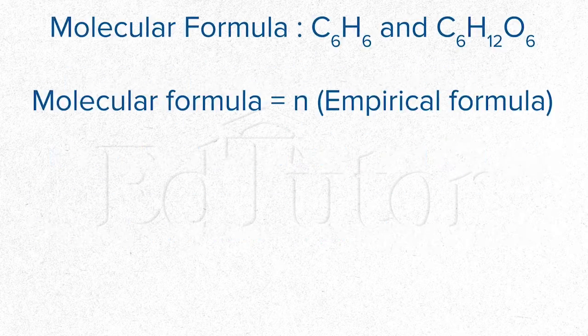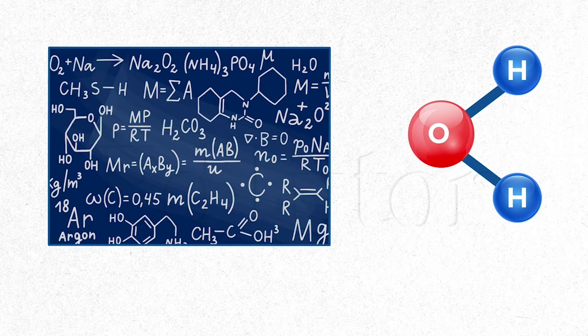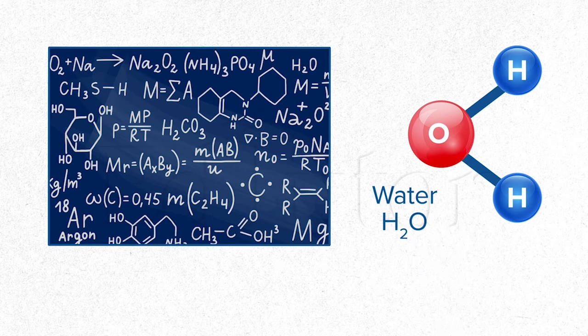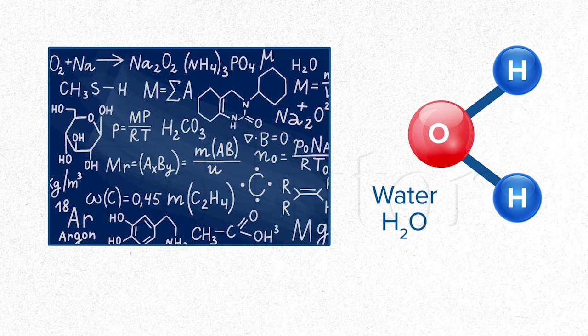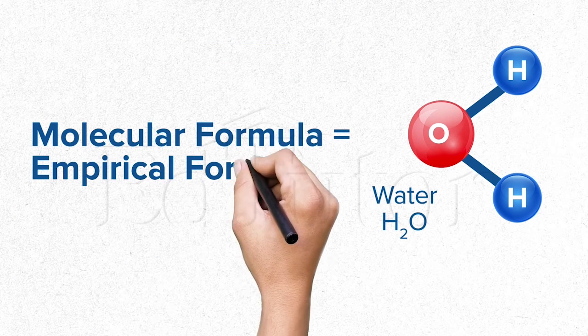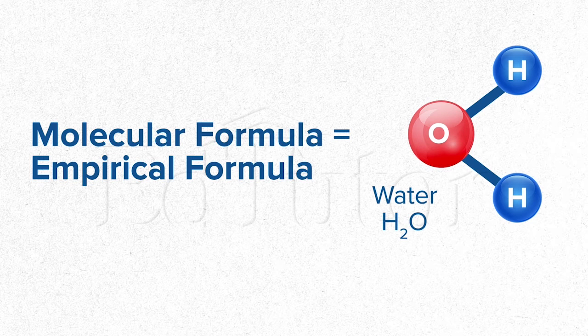Let me tell you that there are numerous molecules and compounds whose empirical and molecular formula are alike. For example, water which has two atoms of hydrogen and one atom of oxygen. This is its molecular formula. But since it cannot be simplified any further, hence it is also the empirical formula of water.